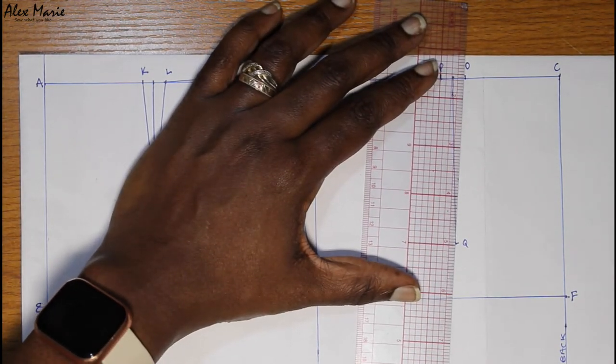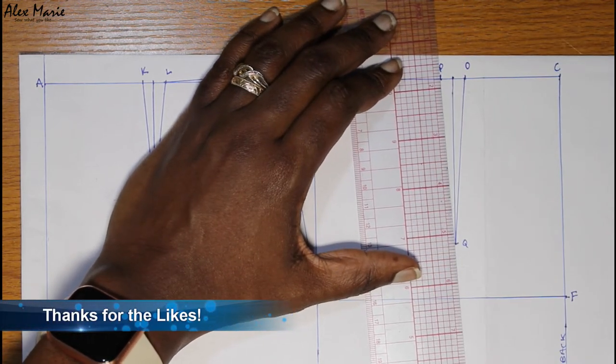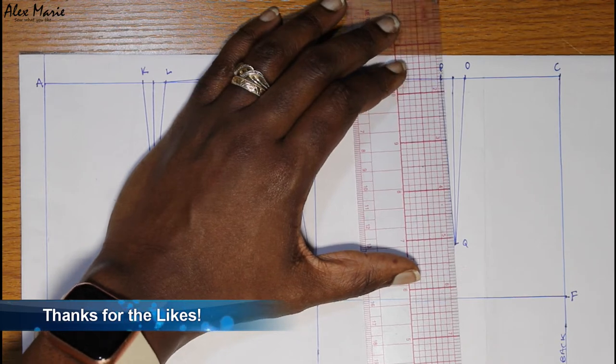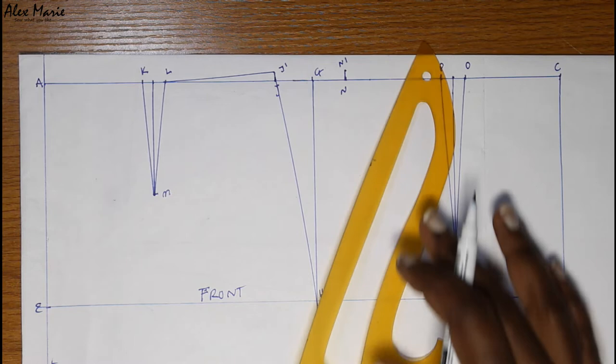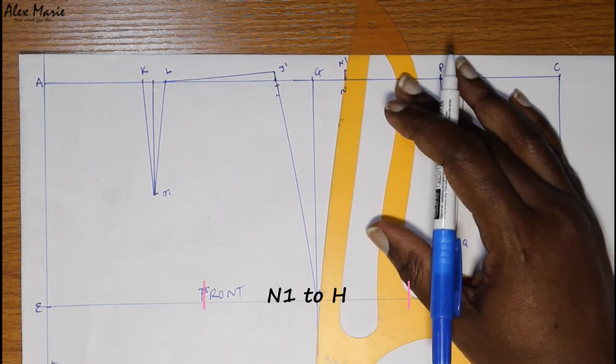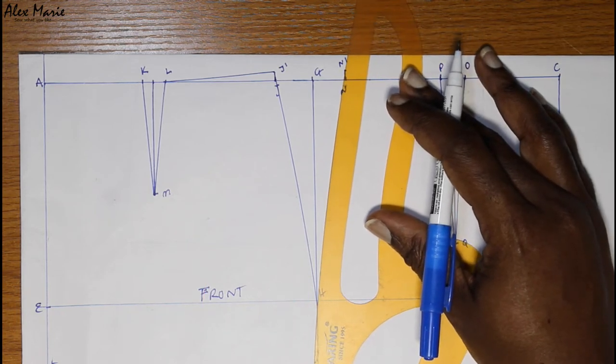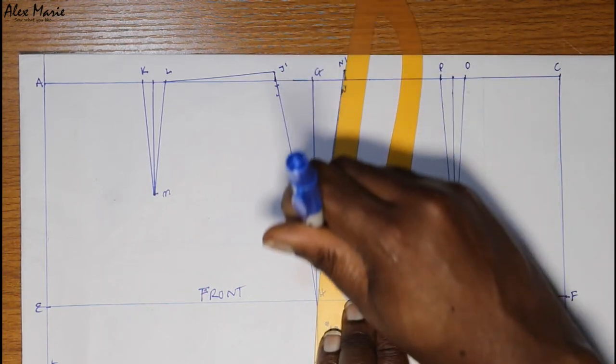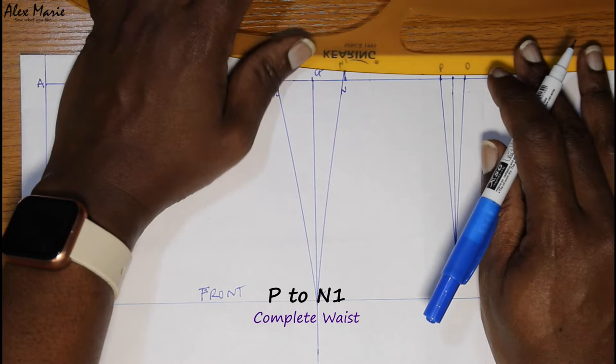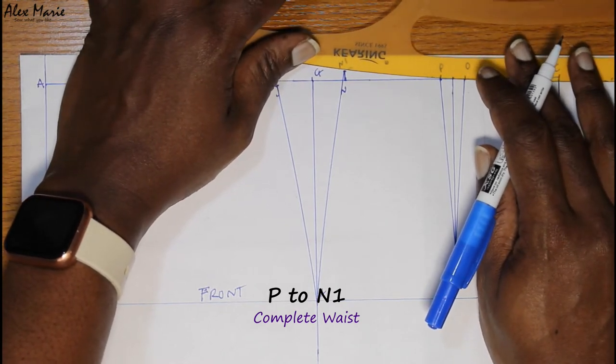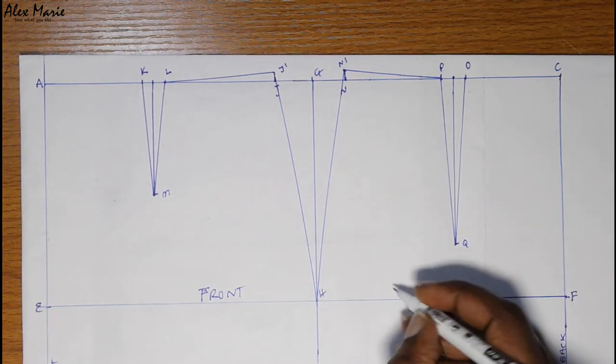And complete your side and your waist. This essentially completes the skirt, and now we're going to cut it out and true it.